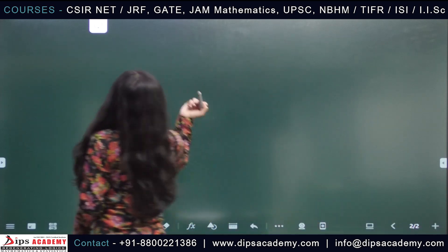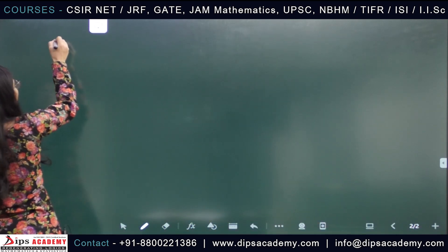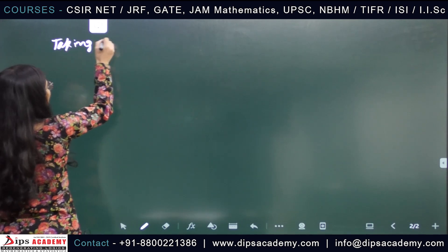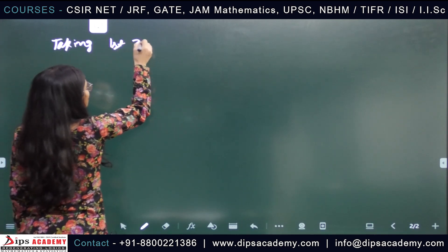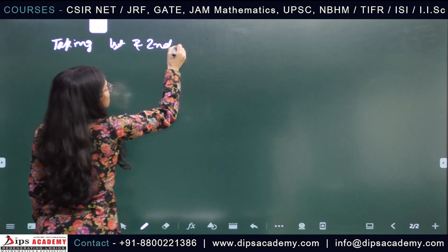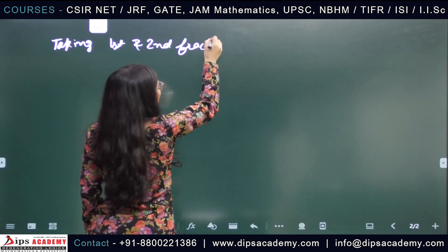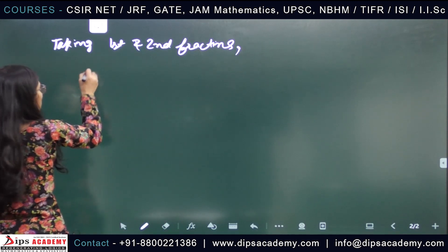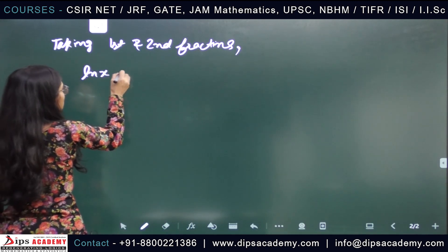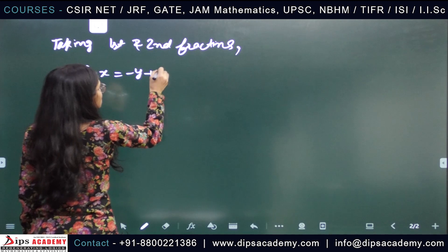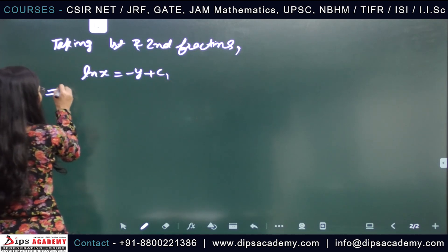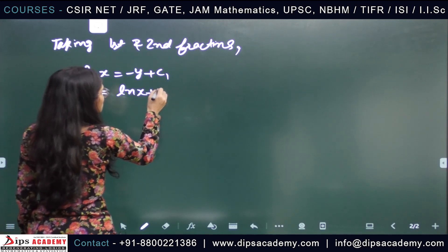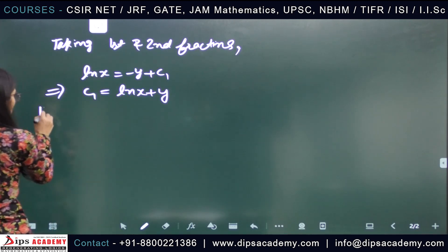Taking the first and second fractions from the auxiliary equations, we get ln x equals minus y plus c₁, which implies c₁ equals ln x plus y.